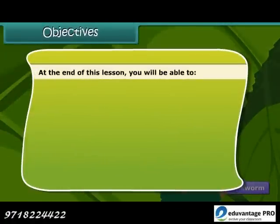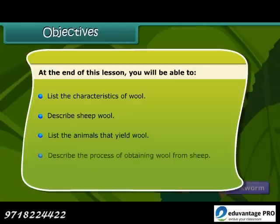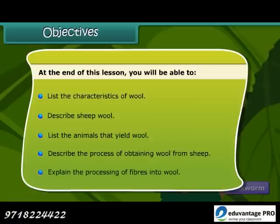At the end of this lesson, you will be able to list the characteristics of wool, describe sheep wool, list the animals that yield wool, describe the process of obtaining wool from sheep, and explain the processing of fibers into wool.